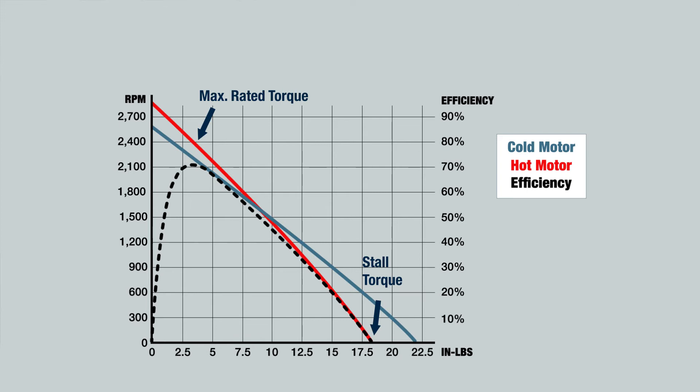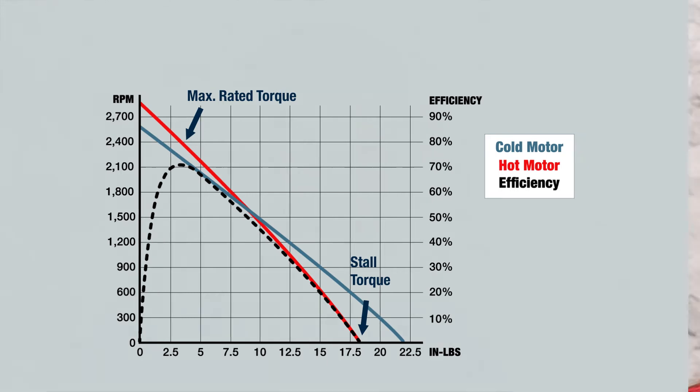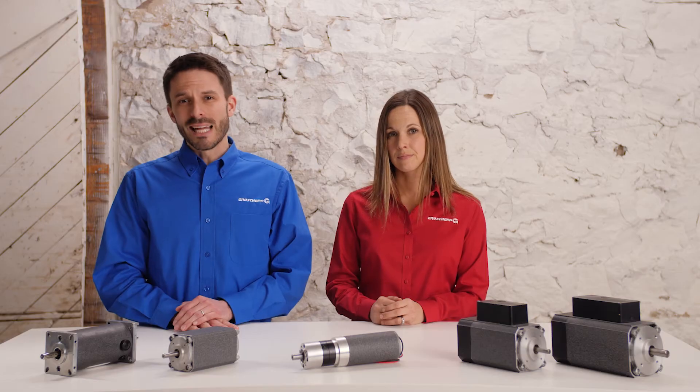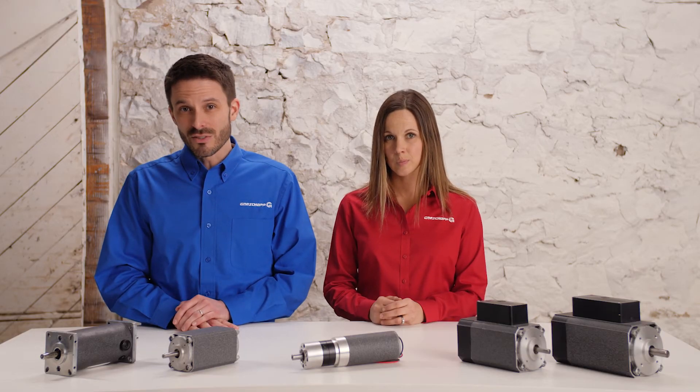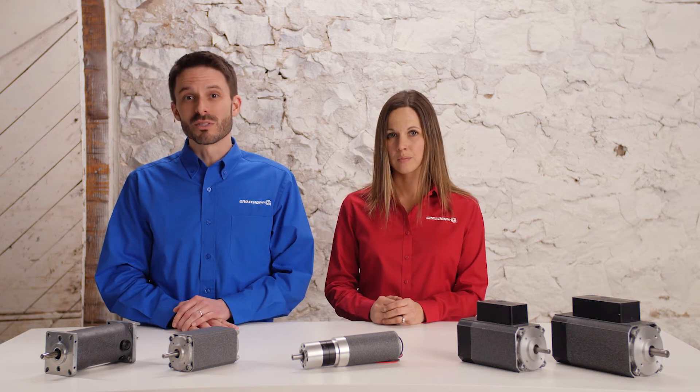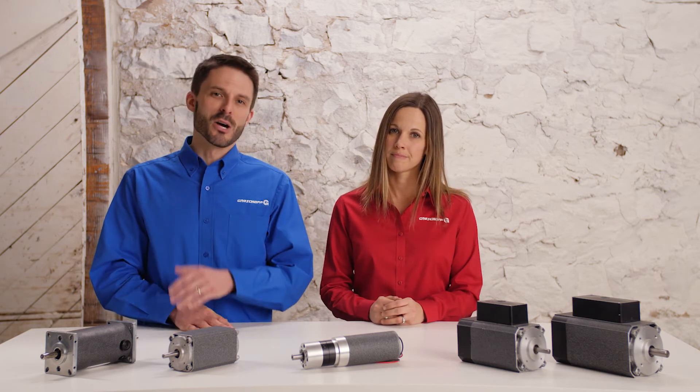The maximum rated torque and speed are determined by the motor manufacturer's testing at a given voltage. This rating is limited by the temperature rise, which is dictated by the UL class. I'd like to point out that we use the hot curve for our calculations since these values will simulate real life operating conditions. Failure to take heat into consideration is one of the most common mistakes we'll discuss in a later video.